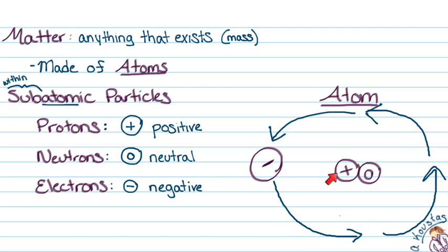So we have the positive proton and the neutral neutron in the middle, and the electron, which is negatively charged, going around on the outside.